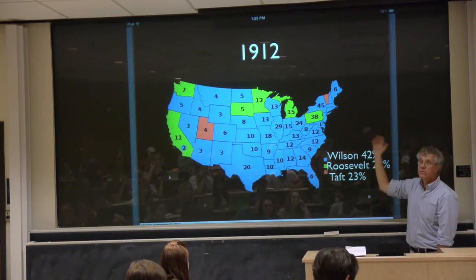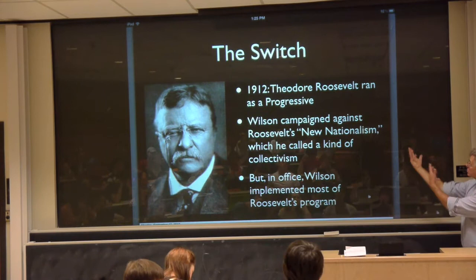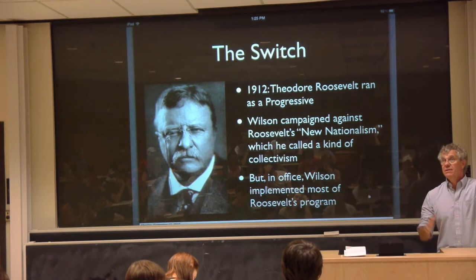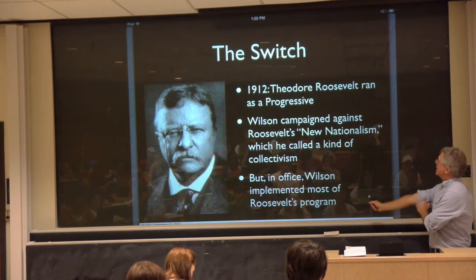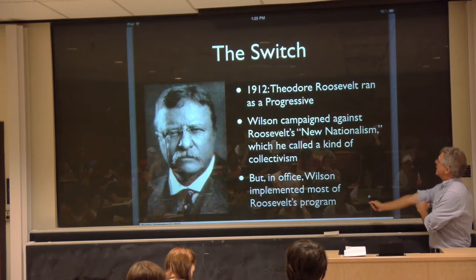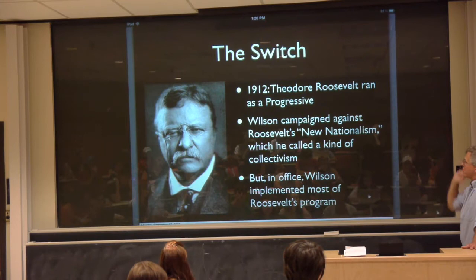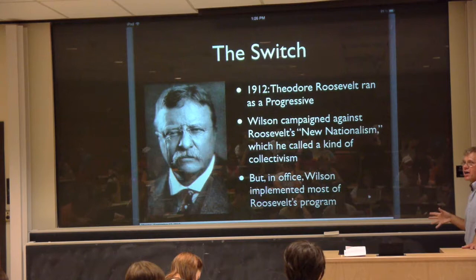Roosevelt had been a successful, popular president but didn't get his party's nomination — he was running for a third term, and Republicans, modeling themselves on George Washington's example, thought that was a bad idea and nominated Taft instead. Roosevelt was furious; he had been trying to bring progressive ideas into the Republican Party and they weren't having it, so he ran as an independent. Wilson campaigned against Roosevelt's program, calling it 'New Nationalism,' but in office Wilson did almost exactly the same thing — he implemented Roosevelt's program and turned out to be more of a progressive than the self-proclaimed progressive Roosevelt.